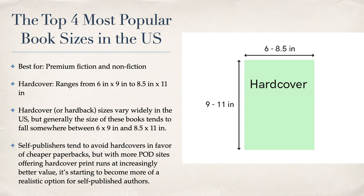Lastly in the US sizes, number four is premium fiction and non-fiction - a hardcover book. Six by nine to 8.5 by eleven; hardcover or hardback sizes vary widely in the US but generally fall somewhere between six by nine and 8.5 by eleven. I don't think we need to worry about hardback at the moment, but that may be just what you're aiming at.